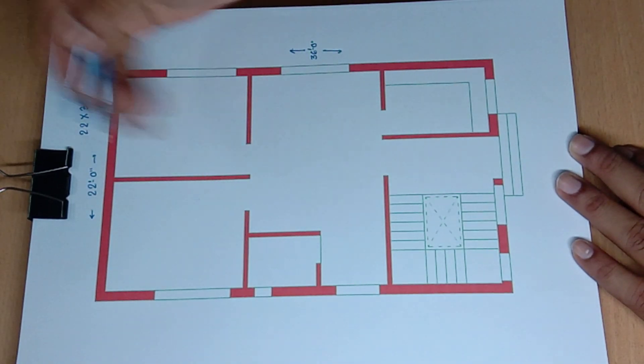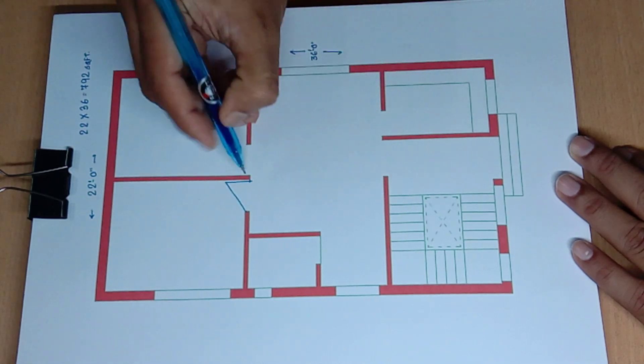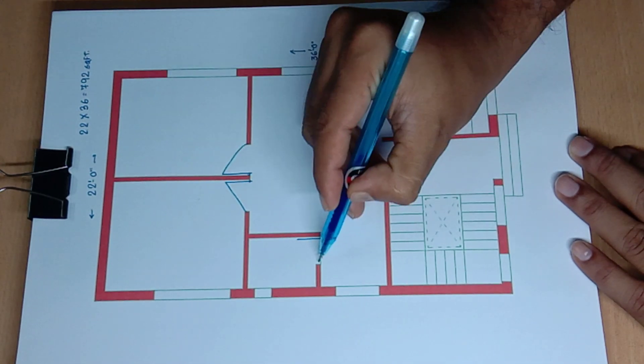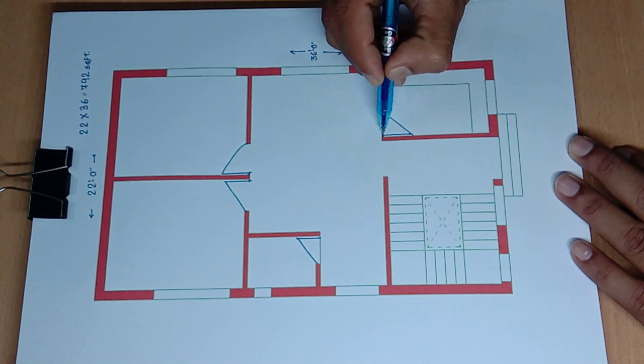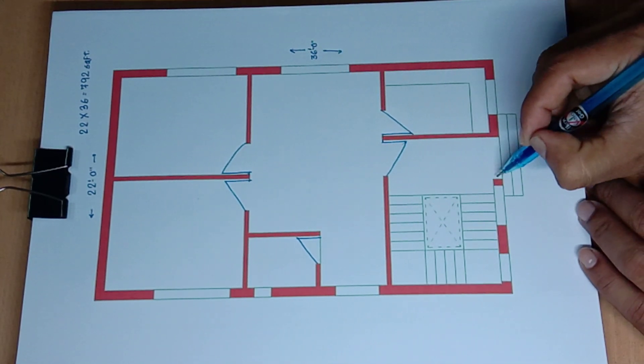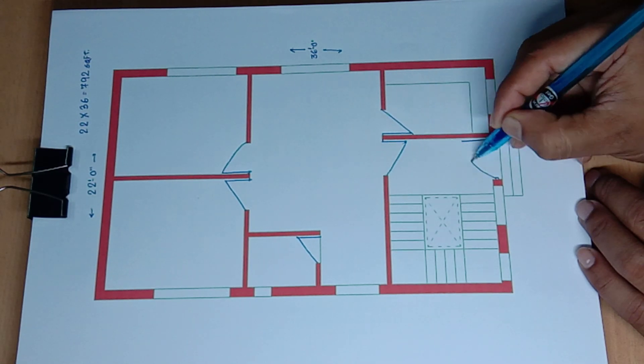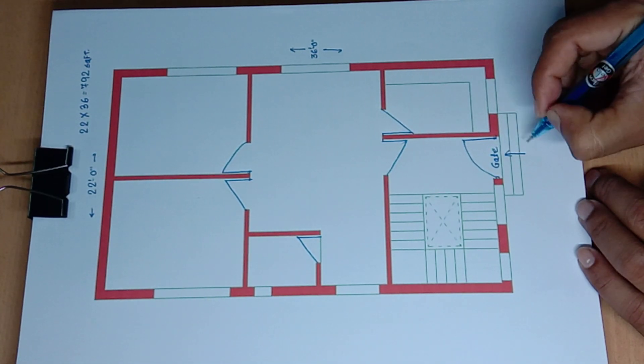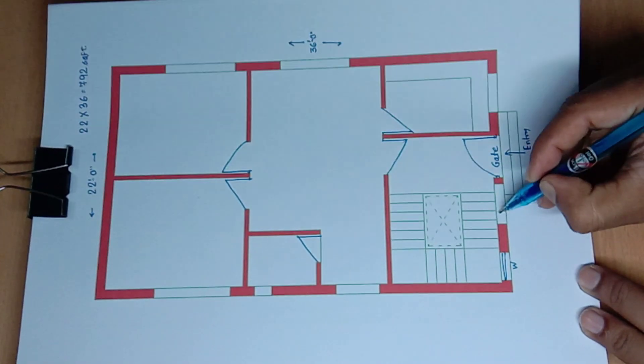3 feet wide door and 2 feet 6 inch wide door. And 3 feet wide door and 3 feet 6 inch wide door. And gate entry and window.